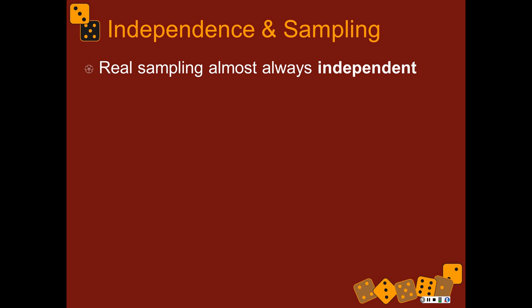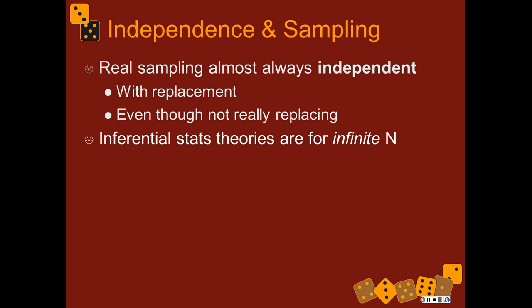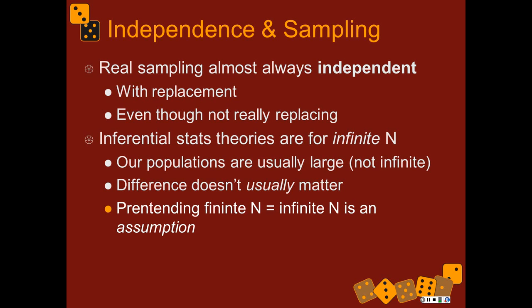Real sampling is almost always independent or effectively independent. We say sampling with replacement even though we don't really replace people in the population. Inferential statistical theories are always for an infinite n and for independent sampling. Our populations are usually large but not infinite. We're going to use traditional statistics — sampling from large populations — large enough that we can pretend we're always sampling with replacement, so each sample is always independent of all other samples.